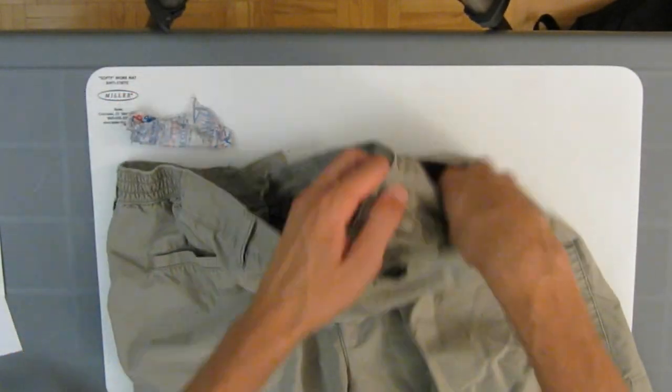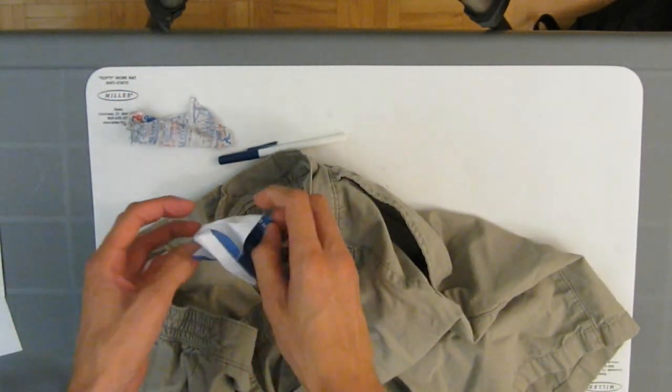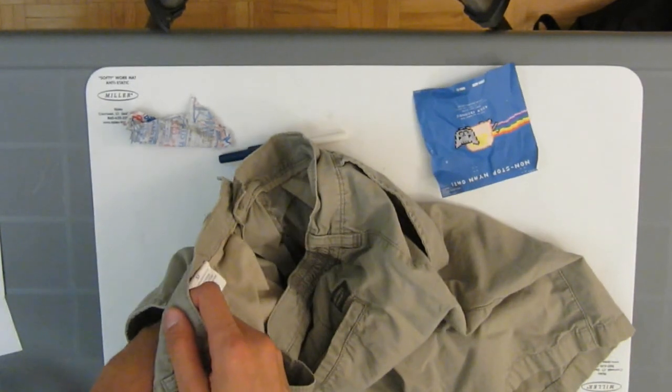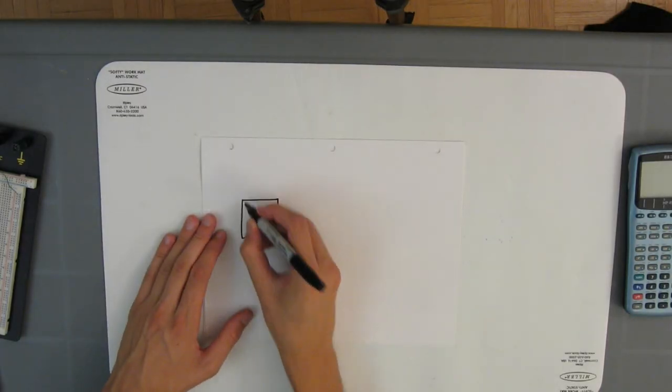Have you ever accidentally put a common household item through the laundry? Like a receipt, a pen, your neighbor's cat, or a cell phone that belongs to your significant, well probably after this ex, significant other?